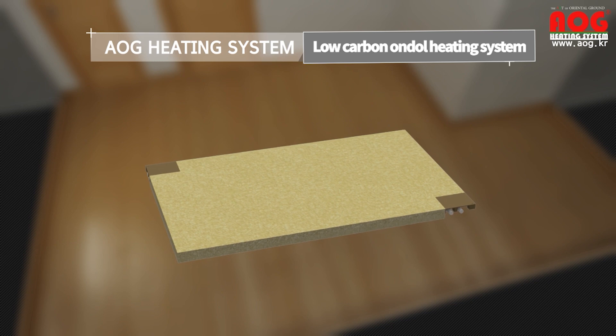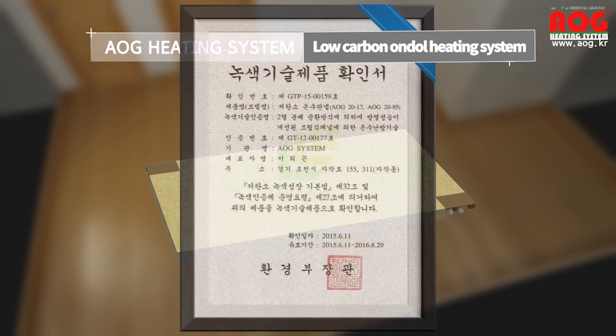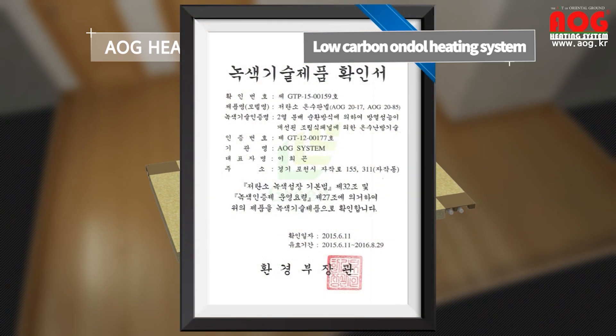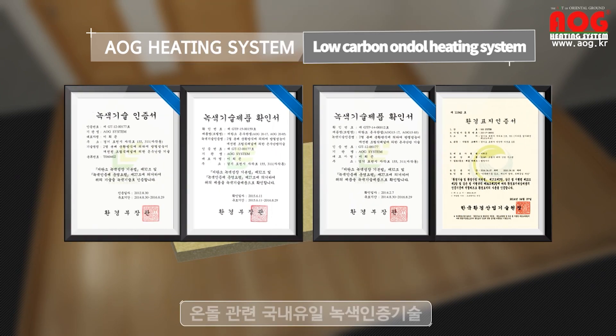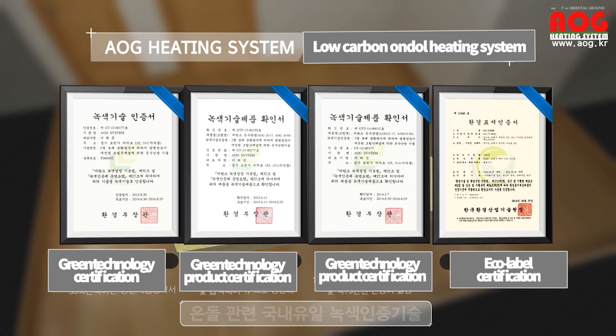The AOG heating system is a low-carbon, eco-friendly building material that has been certified by the Ministry of Environment as green technology, a green product, and carries the eco-label certification.